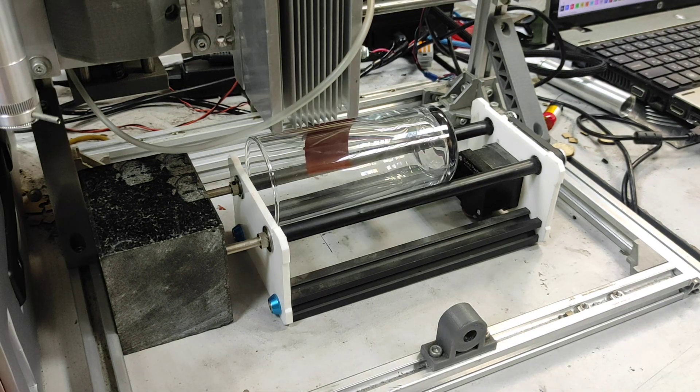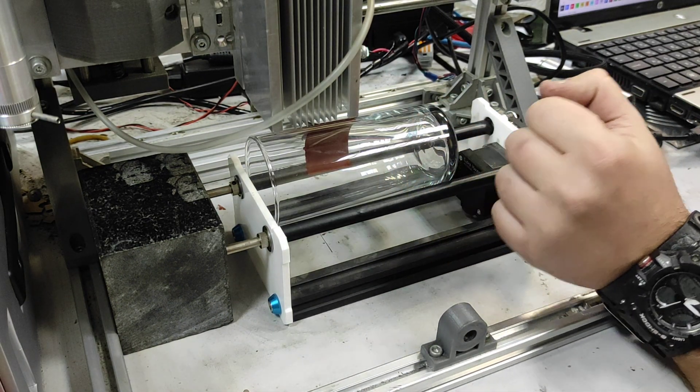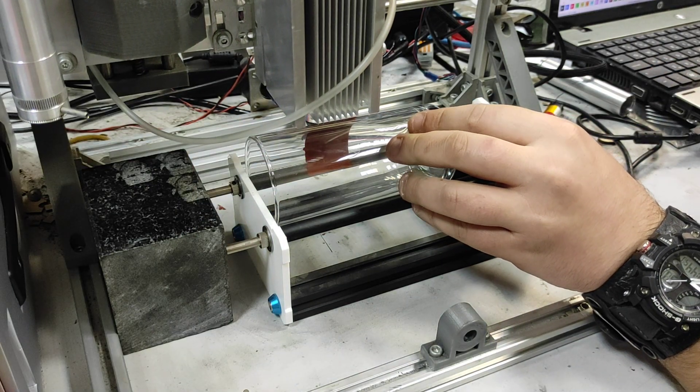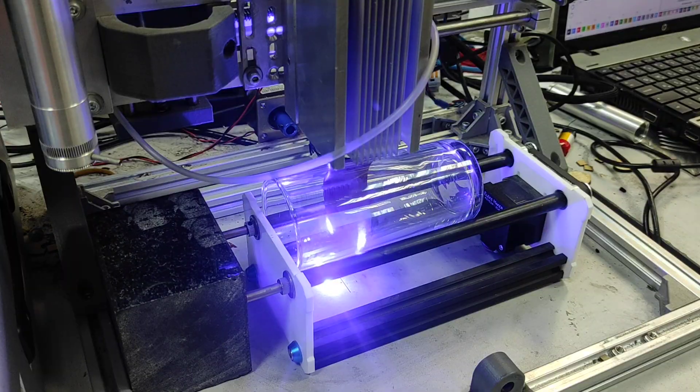So we remove the masking tape and now we need to position the laser and we're ready to engrave. Okay let's start.